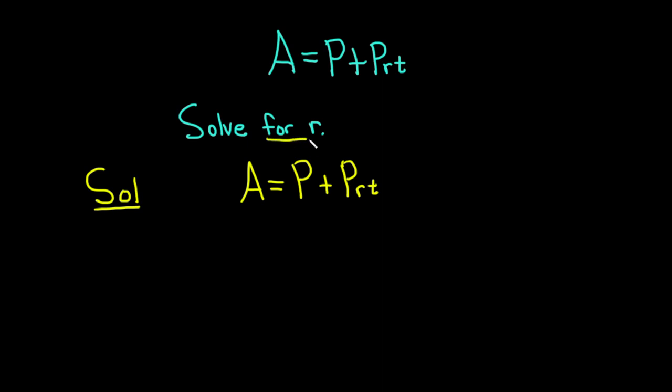And we're looking for little r. So little r is over here, next to the P and the T. So let's start by isolating this PRT term. Because we have a plus P on the right-hand side, let's get rid of it by subtracting P from both sides. We're going to write A minus P, A minus P, and then these cancel.